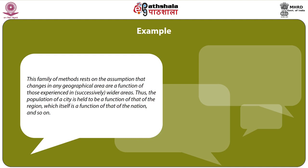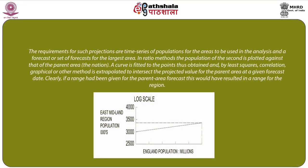Thus, the population of a city is held to be a function of that of the region, which itself is a function of that of the nation, and so on. The requirements are time series of populations for the areas to be used in the analysis and a forecast for the largest areas. In ratio methods, the population of the subarea is plotted against that of the parent area or the nation. A curve is fitted to the points obtained and extrapolated — by least squares, correlation, or graphical methods — to intersect the projected value for the parent area at a given forecast date. As depicted in the log scale, the y-axis refers to the East Midlands region population in thousands, and the England population in millions over a period of time is presented.